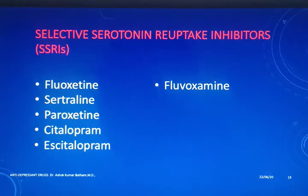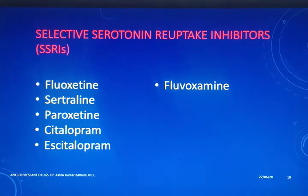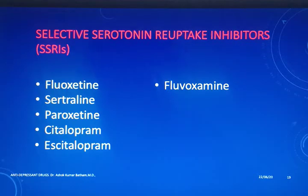Moving to the selective serotonin reuptake inhibitors: five or six drugs are very commonly used in today's psychiatric practice — fluoxetine, sertraline, paroxetine, citalopram, escitalopram and fluvoxamine. For students, many names are phonetically similar: fluoxetine and paroxetine together, fluvoxamine starting with F, then sertraline, and if you have citalopram you have its S-enantiomer escitalopram, that is S-citalopram.